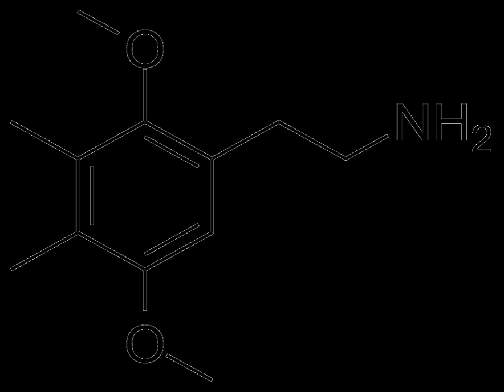== Chemistry == 2CG is 3,4-dimethyl-2,5-dimethoxyphenethylamine, with the formula C12H19NO2.